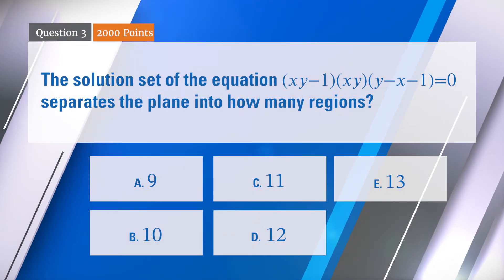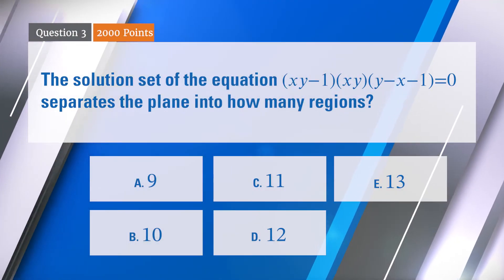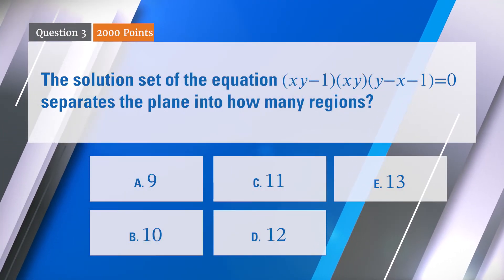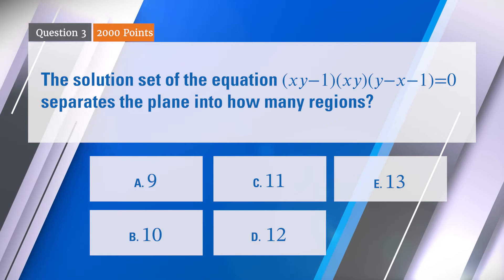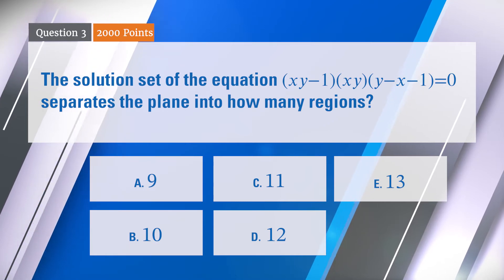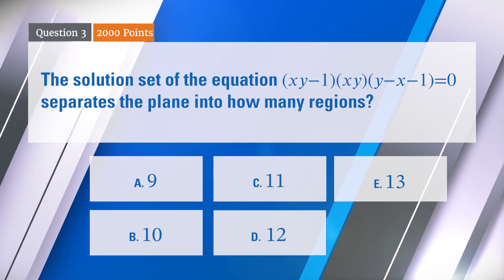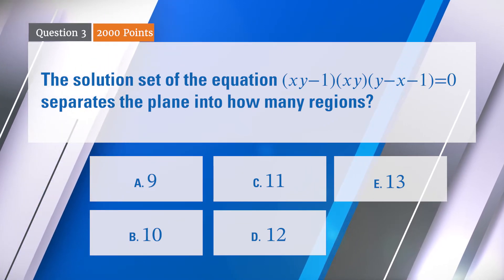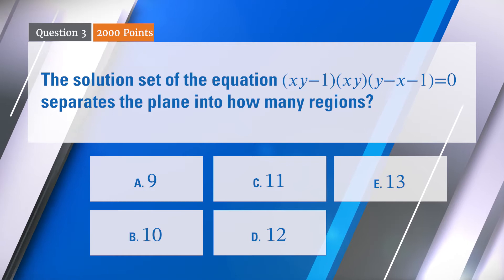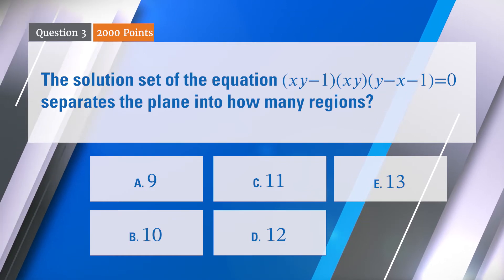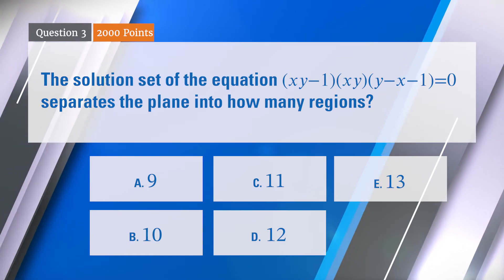The solution set of the equation (xy minus 1)(xy)(y minus x minus 1) equals zero — those three expressions in parentheses — that's the solution set to the equation equaling zero.